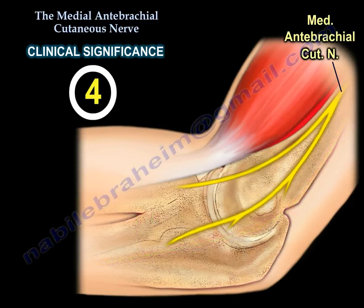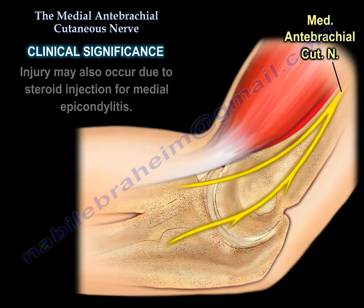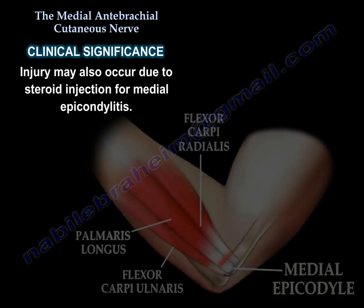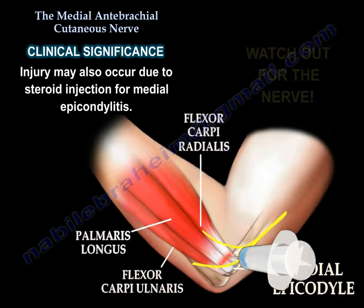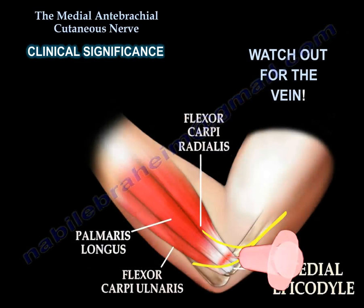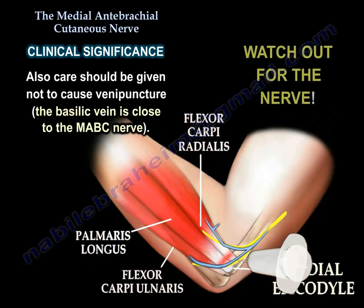Number 4: Injury to the nerve can occur from surgical procedures on the medial side or the posterior side of the elbow. Injury may also occur due to steroid injection for medial epicondylitis. Care should also be taken during venipuncture, as the basilic vein is close to that nerve.